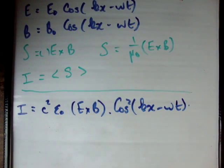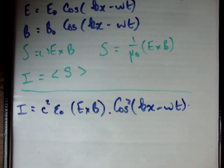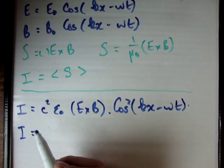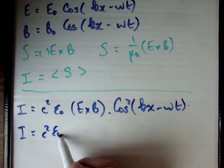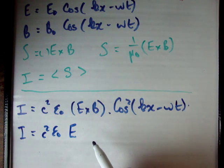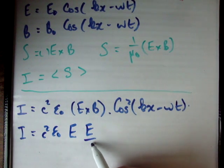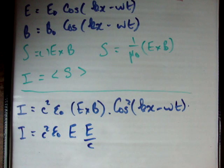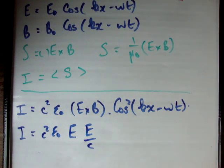Next, we need to do a small bit of manipulation here, and we'll find that I is equal to C squared epsilon zero times the electric field times the electric field over C, because we know that the electric and magnetic fields are related by a factor of C.